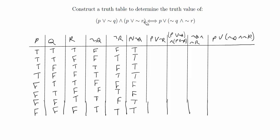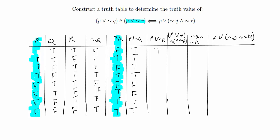For P∨¬R, we do the same thing, looking at P and not R. Again, the first four rows are true because P is true. Then for the last four, not R is false, true, false, true — giving false, true, false, true. So that column is now done.